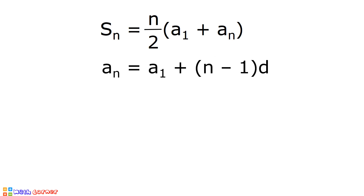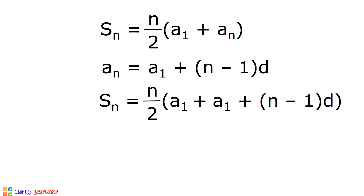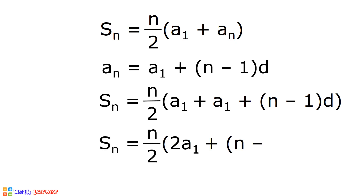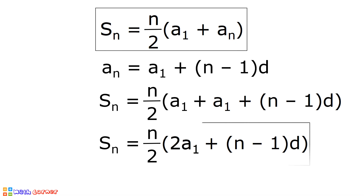We will substitute a sub 1 plus the quantity n minus 1 times d in place of a sub n. After substitution, our formula becomes S sub n is equal to n divided by 2 times the quantity a sub 1 plus a sub 1 plus the quantity n minus 1 times d. Combining a sub 1 and a sub 1 gives 2 a sub 1, so the formula becomes S sub n is equal to n divided by 2 times the quantity 2 a sub 1 plus the quantity n minus 1 times d. These are the two formulas we can use in solving for the sum of the terms of an arithmetic sequence.